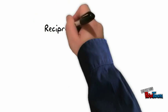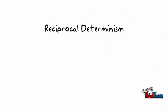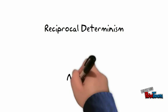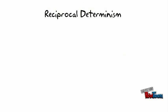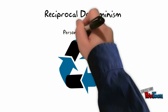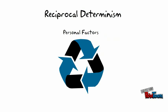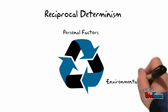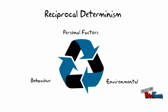Two of the most important factors making up Bandura's theory are Reciprocal Determinism and Modeling. Reciprocal Determinism is the theory that three factors — personal factors, the environment, and behavior — mutually influence each other to create the situations we observe.